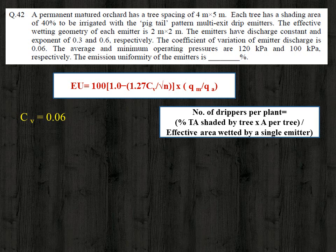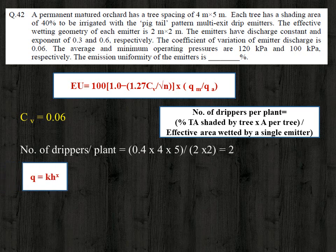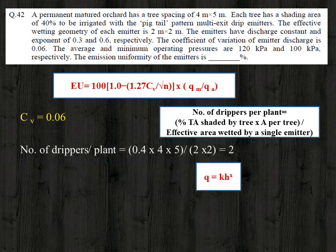The percentage area shaded is 40 percent, the area per tree is 4 × 5 = 20 square meter, and the effective area wetted by each emitter is 2 × 2 = 4 square meter. Substituting these values, we get the number of drippers per plant as 2.